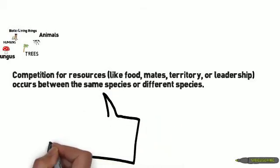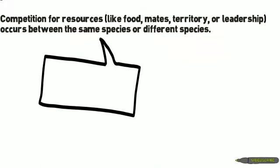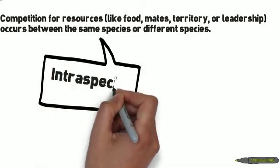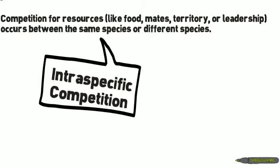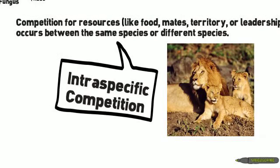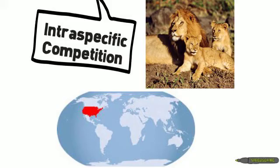When organisms of the same species compete with each other, it is called intraspecific competition. For example, a pride or pack of lions can compete with another pride for food, or lions fight each other to be the head of the pride. To remember this, know that intranational means within one nation, so intraspecific competition involves one species.